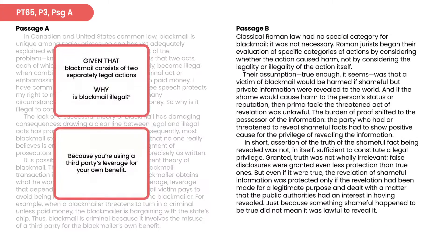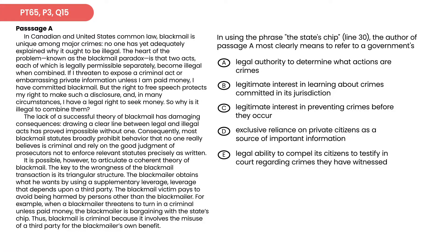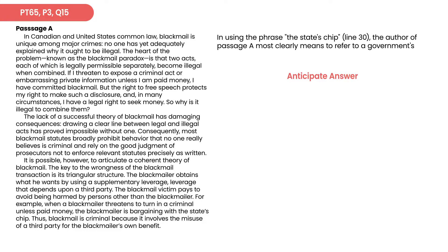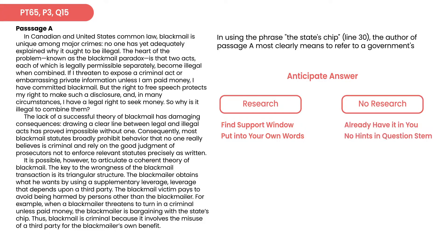We'd normally drift right into reading passage B, but remember we're trying something different — we're going to go work on some questions. We'll immediately go to question 15, which was asking only about passage A. They're asking: what does the phrase 'the state's chip' mean? Before diving into answers, I ask myself: do I need to research this in the passage? I want to predict what the answer will say. Researching means finding the keywords, reading around that area, the window of supporting text, putting it into my own words, then heading to the answers.